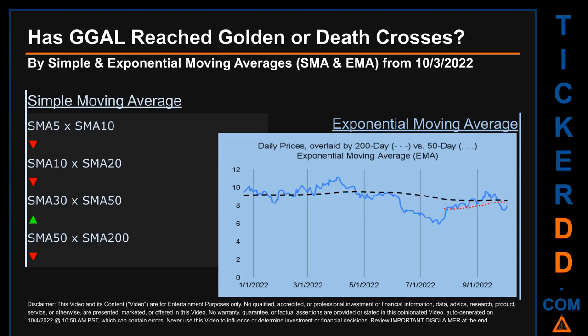Has GGAL's price reached a golden cross or death cross? Golden cross and death cross are basic signals that compare average prices across two specified trade-day ranges — a short-term versus a long-term range, for example five-day versus 10 trade days. A golden cross is a bullish signal appearing when a ticker's short-term moving average crosses above its long-term average. Conversely, a death cross is a bearish signal when the short-term crosses below its long-term moving average.